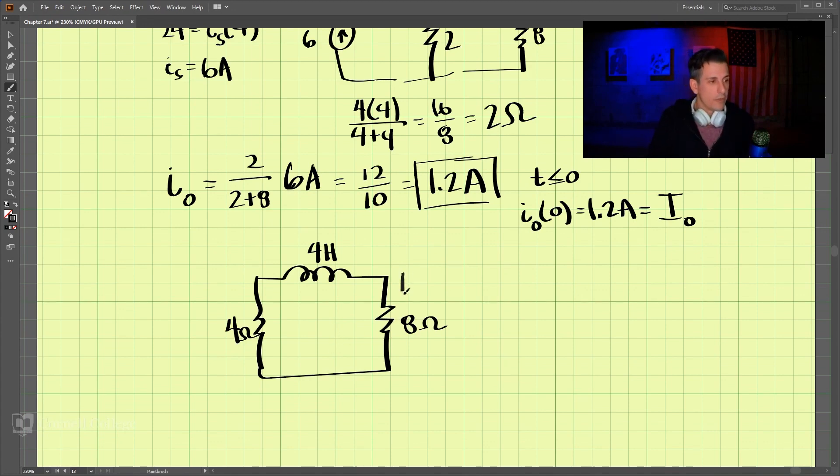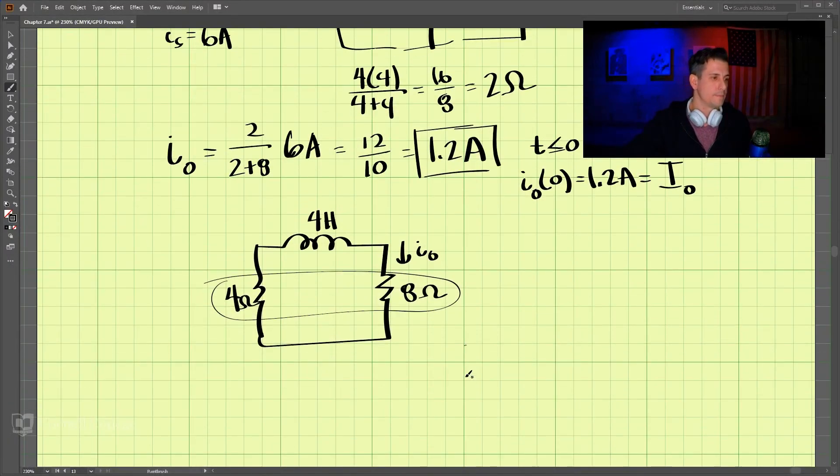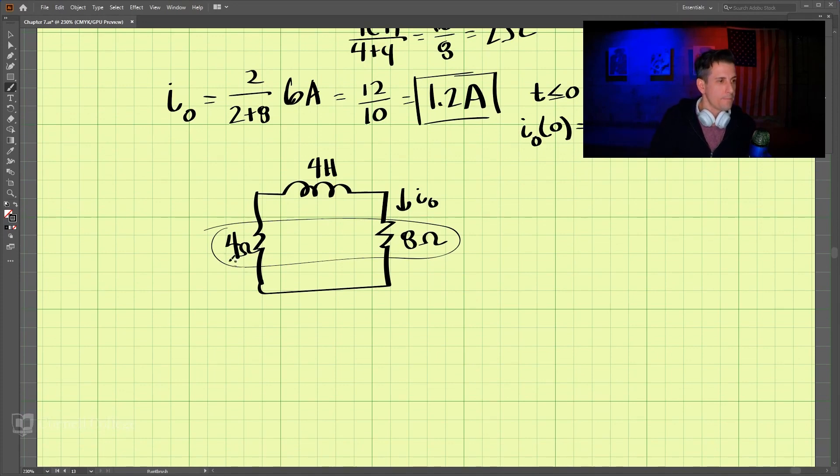Now, this is I-naught here. And these two are in series with each other. Those two are in series with each other. So they can be combined. So combining those two, we get 12 ohms.